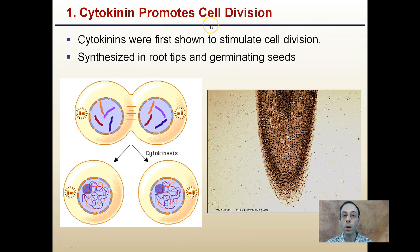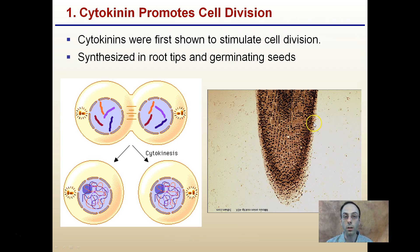Cytokinins promote cell division. They were first shown to stimulate cell division in the root tip, which is an area where a lot of mitosis is occurring and cytokinin levels are very high. They can also be found in germinating seeds. As a memory tip, cytokinins and cytokinesis sound very similar, which can help you remember that cytokinins are involved in cell division.